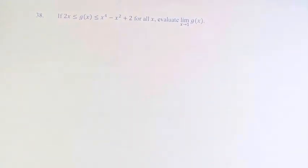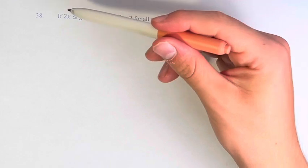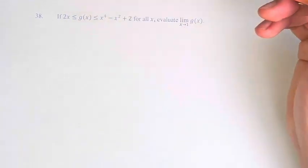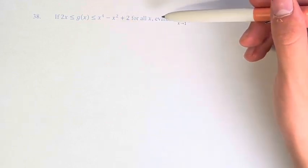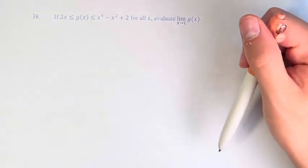Hello and welcome back to another video. In this problem, we're asked if 2x is less than or equal to g(x) is less than or equal to x to the fourth minus x squared plus 2 for all x, evaluate the limit as x approaches 1 of g(x).